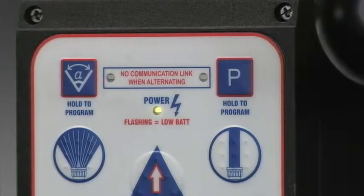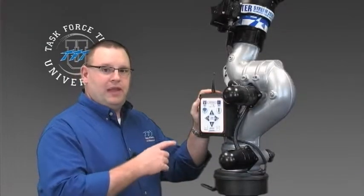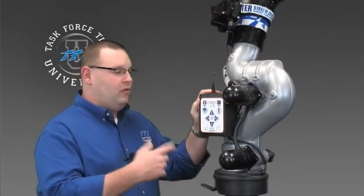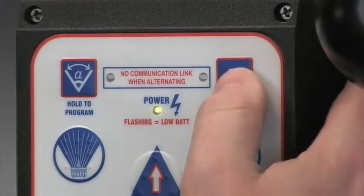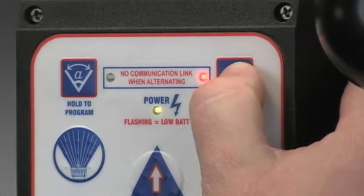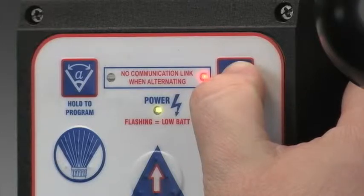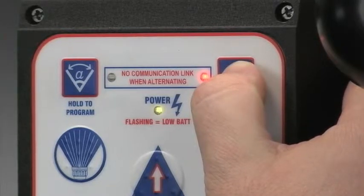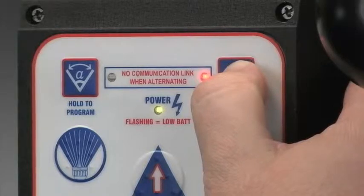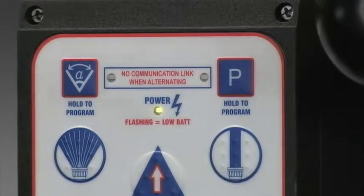Once we have power and the lights have stopped flashing, we need to make sure that we go into that Park routine or Park program before one minute has expired. Let's go ahead and press and hold Park. Once you see the light flash, that means it's in program mode.